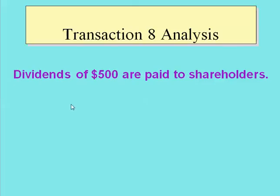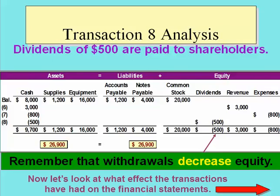We can also analyze transactions using a horizontal method, expanding the basic accounting equation for increases or decreases. For example, dividends of $500 are paid to shareholders. Any time we pay out something, cash is affected — to decrease cash, which is an asset, we credit it. Dividends increase by $500, but remember, dividends decrease our equity, so we increase dividends with a debit. Debit dividends, credit cash $500. The horizontal method shows that subtraction from equity because dividends decrease owner's equity.